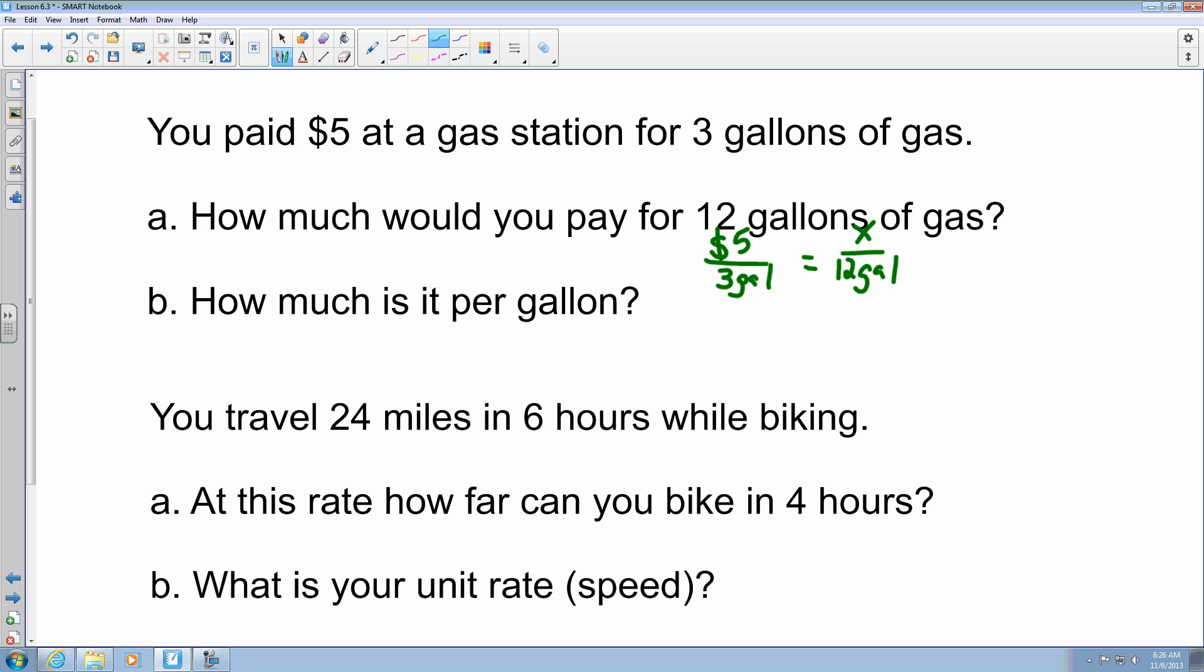Same rules apply. We can cross multiply here. This gives me 3x and then it equals 5 times 12, which gives me 60. That means if I divide both sides by 3, x is going to equal 20. So essentially it's going to cost you $20 for 12 gallons of gas.